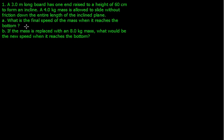I'm just going to put this over here in this corner. Okay, a 3.0 meter long board has one end raised to a height of 60 centimeters to form an incline. A 4 kilogram mass is allowed to slide without friction down the entire length of the incline plane. What's the final speed when it reaches the bottom? And if the mass is replaced with an 8.0 kilogram mass, what would be the new speed when it reaches the bottom?